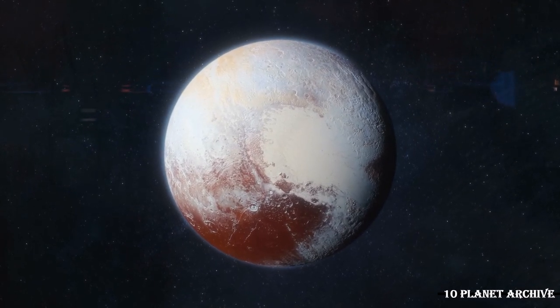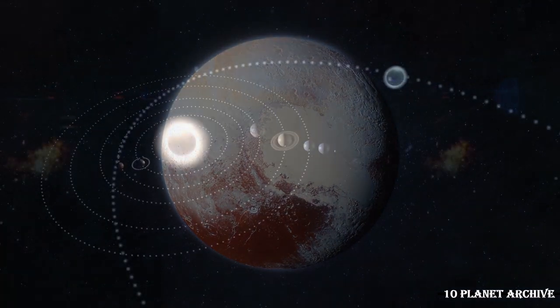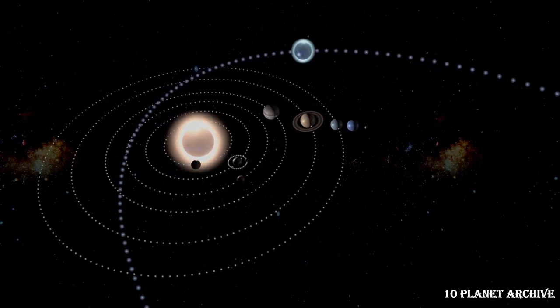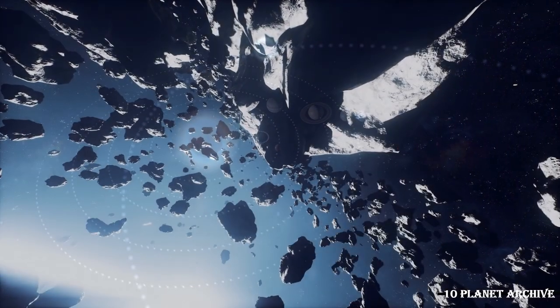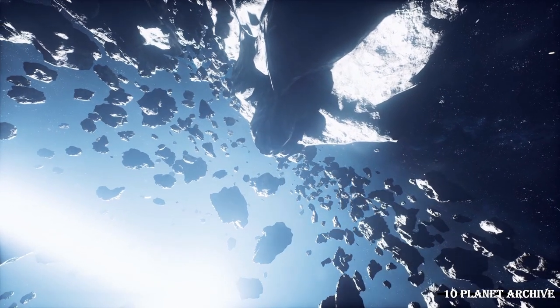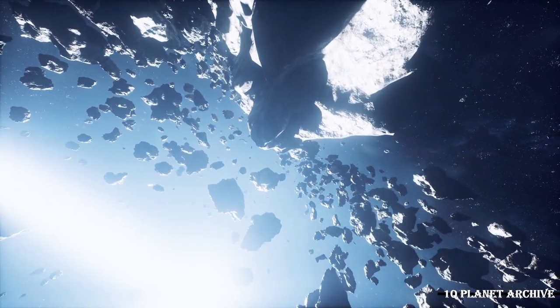Formation. Dwarf planet Pluto is a member of a group of objects that orbit in a disk-like zone beyond the orbit of Neptune called the Kuiper Belt. This distant realm is populated with thousands of miniature icy worlds, which formed early in the history of our solar system about 4.5 billion years ago.